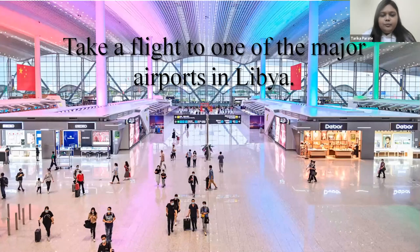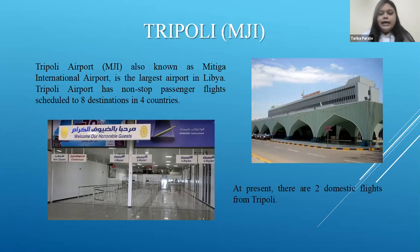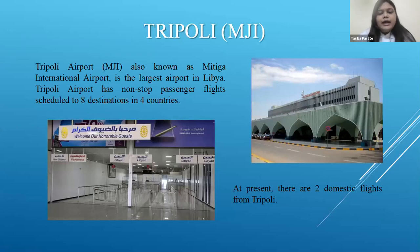In Libya there are a total of 18 airports. We will learn about some of the main ones. The first airport is Tripoli airport, also known as Mitiga International Airport, and it is the largest airport in Libya. Tripoli airport has non-stop passenger flights scheduled to eight destinations in four countries. The airport type is joint — both public and military. At present there are two domestic flights from Tripoli.